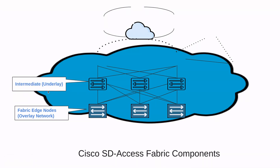We have the intermediate nodes, which form the underlay. These are routers or extended switches that do not provide any SD Access Fabric role other than underlay services. Basically, they are just connecting the fabric edge nodes with the other nodes. They don't provide anything beyond wired connectivity between devices. The underlay is the underlying physical layer, and its only purpose is to transport data packets between network devices for the SD Access Fabric overlay.